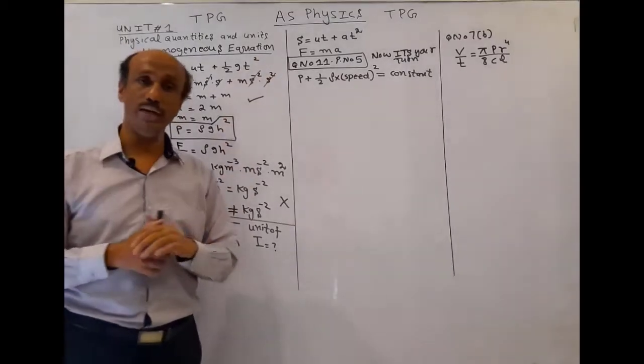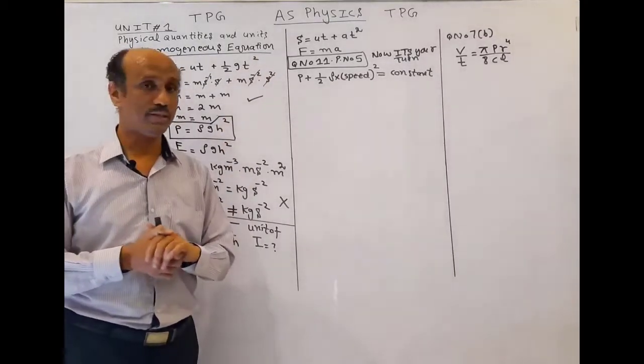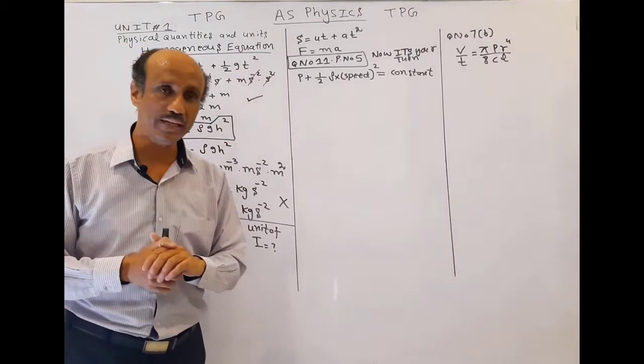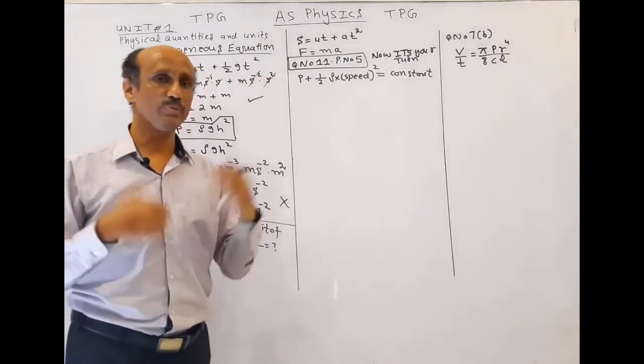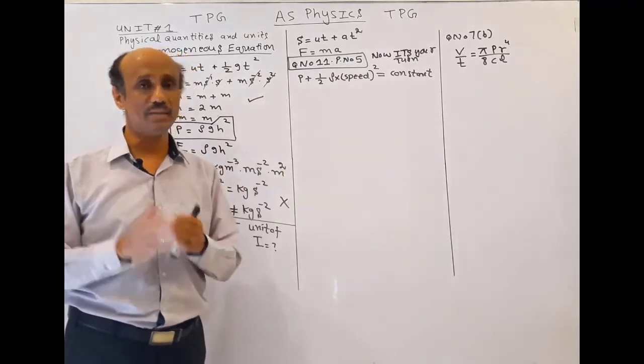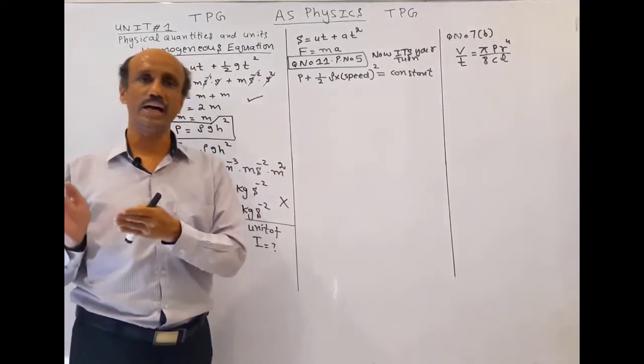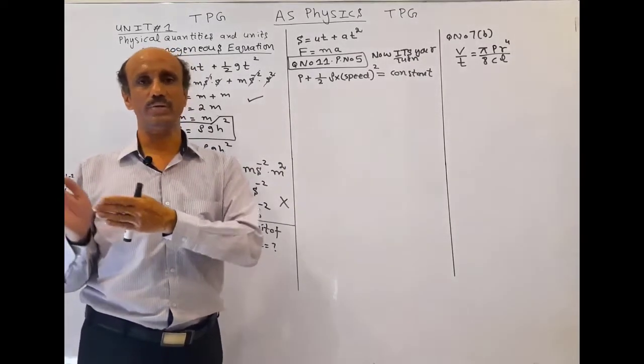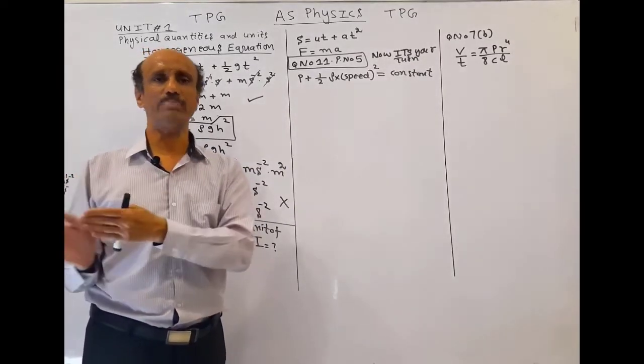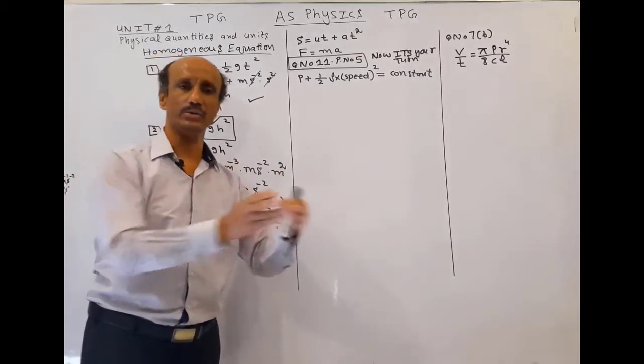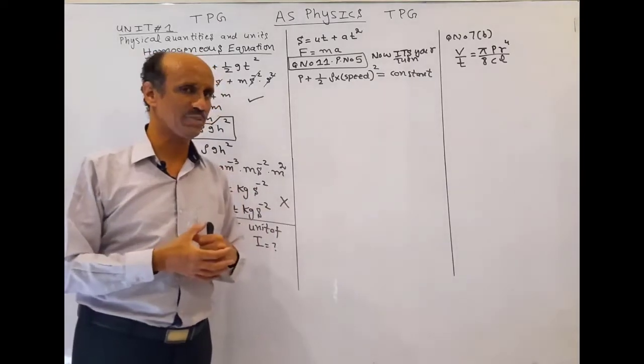Similarly, f = ma is a correct equation, and if you solve it you will get homogeneous units on the left hand side and on the right hand side as well.